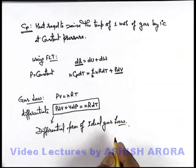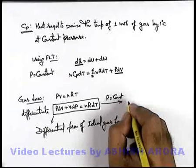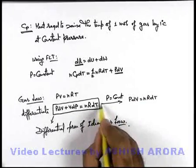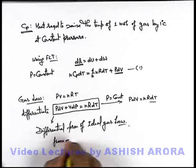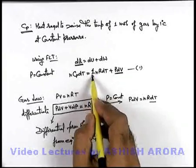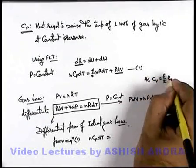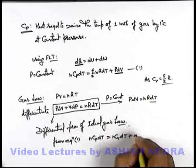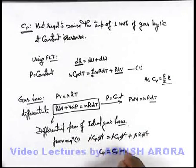Since pressure is constant, dp = 0, so p·dV = n·R·dT. Substituting back into equation 1: n·Cp·dT = n·Cv·dT + n·R·dT. Cancelling n·dT gives Cp = Cv + R.